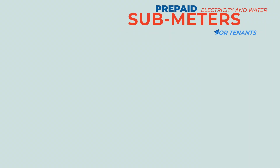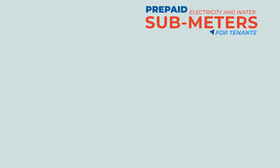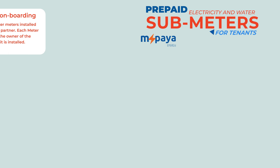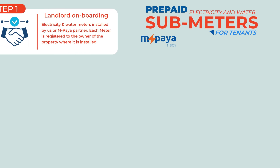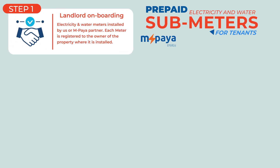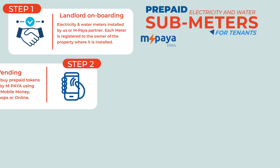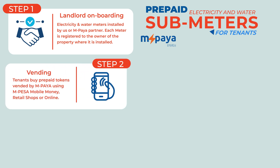This is how the Empire sub-metering works in simple steps. Step 1: Landlord onboarding — electricity and water meters are installed by us or an Empire partner, and each meter is registered to the owner of the property where it is installed. Step 2: Vending — tenants buy prepaid tokens vended by Empire using M-Pesa Mobile Money, retail shops, or online.